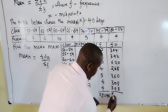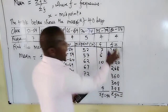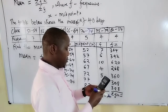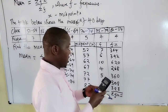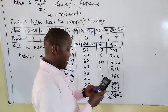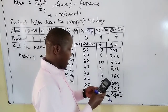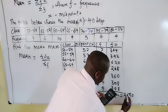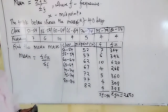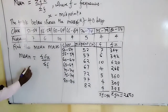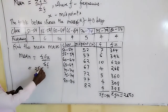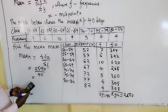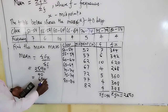Therefore we get the sum of fx: 364 plus 342 plus 620 plus 268 plus 360 plus 308 plus 328, which gives us 2590. Now applying the formula, mean equals sum of fx divided by sum of f, so that is 2590 divided by 40, which gives us a mean of 64.75.